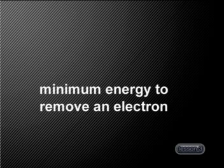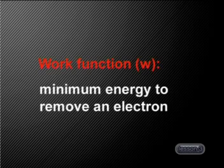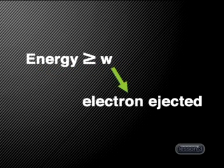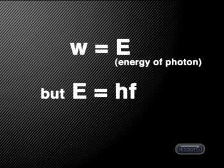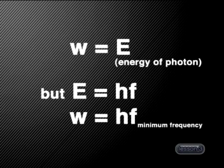Using Einstein's theory, let's explain what is happening in the photoelectric experiment. For every metal, there is a minimum amount of energy needed to remove an electron. This is called the work function and is represented by W. When a photon collides with the metal, all the energy of the photon is transferred to an electron in the metal. If the amount of energy of a photon is equal to or greater than the work function, then an electron can be ejected from the metal. Since the work function is a measure of the energy of the photon, it is equal to E. But E = hf, therefore the work function is also equal to Planck's constant times frequency.